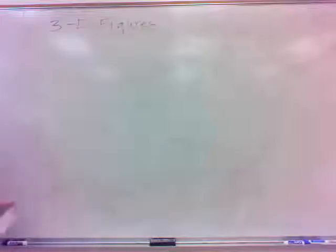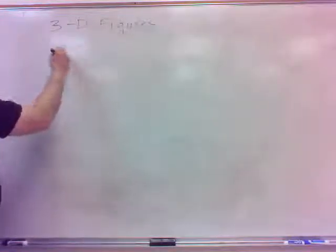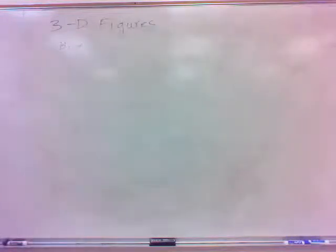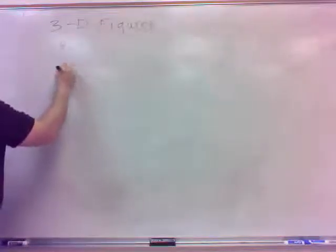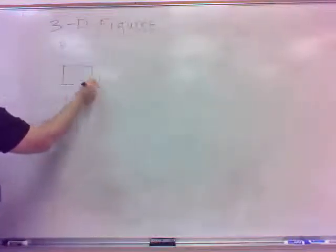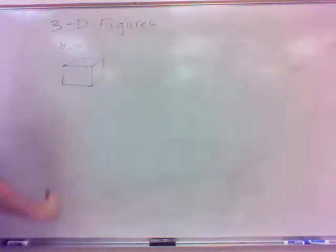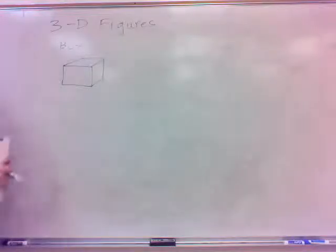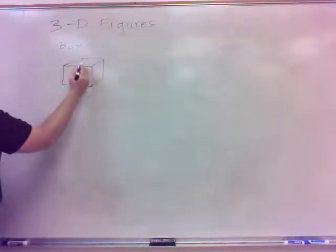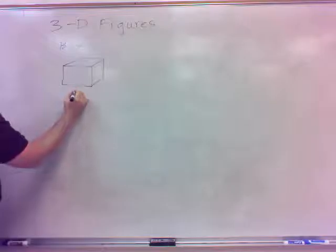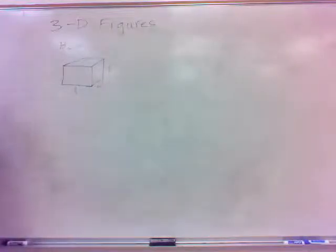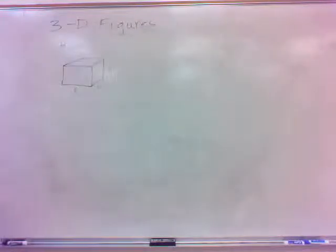The most basic three-dimensional figure is the box — a three-dimensional rectangle. These figures have three dimensions: length, width, and height. We're going to talk about some different types of three-dimensional figures.